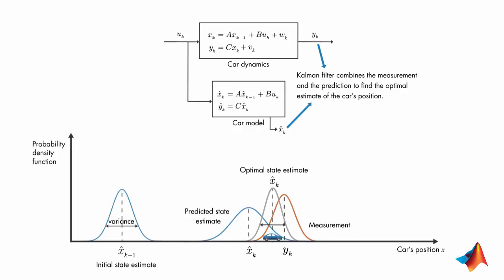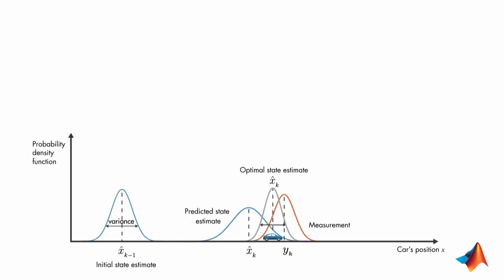Computationally, the multiplication of these two probability density functions relates to the discrete Kalman filter equation shown here. Does this ring a bell? Doesn't it look similar to the state observer equation that we discussed in previous videos?